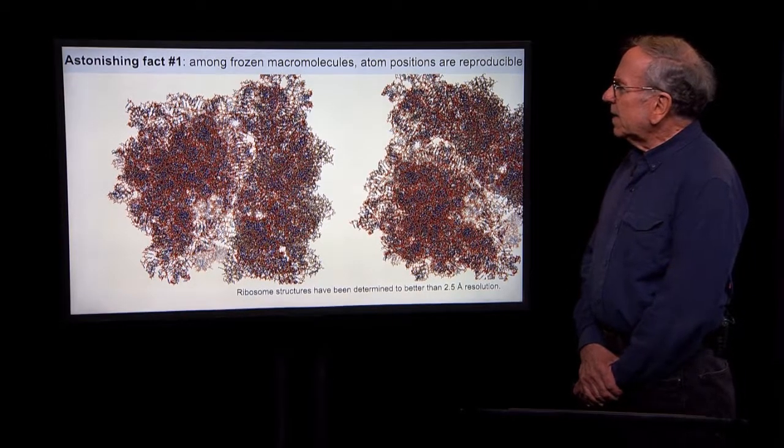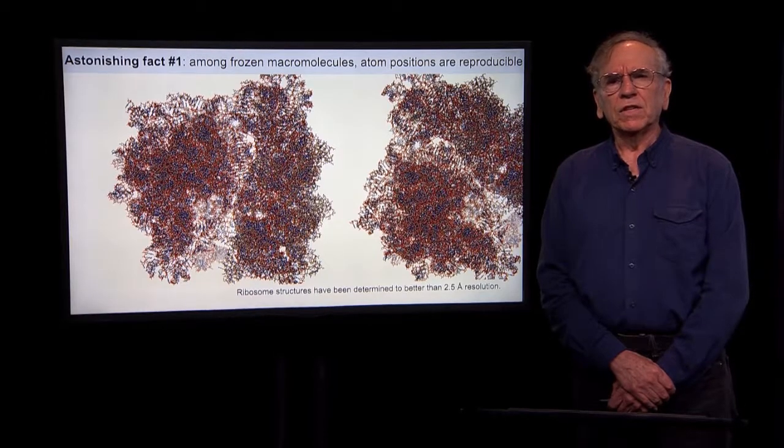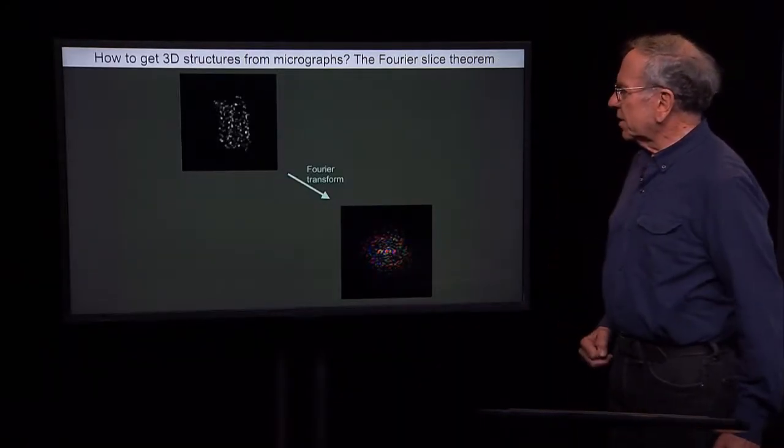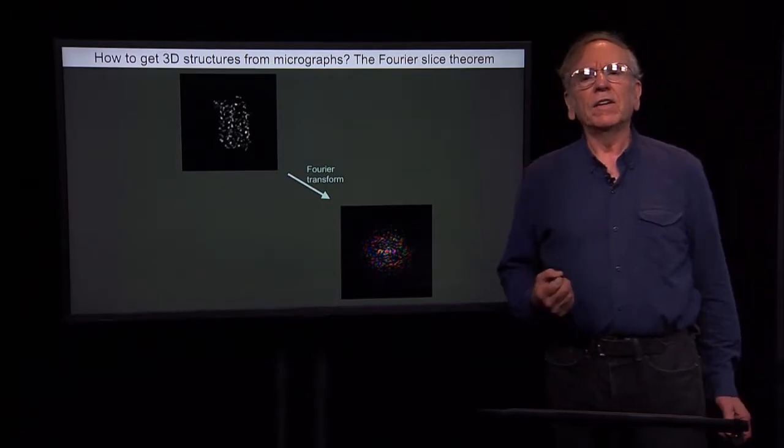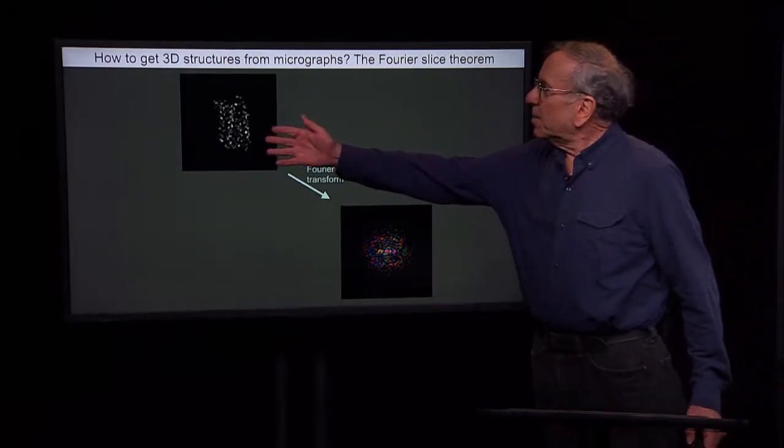Now, how do we get three-dimensional structures from two-dimensional images in the first place? Well, it all starts with an important theorem that we'll talk about later called the Fourier slice theorem.